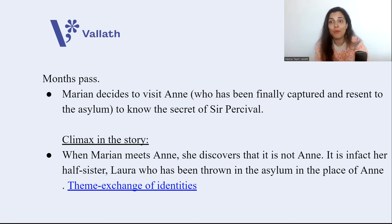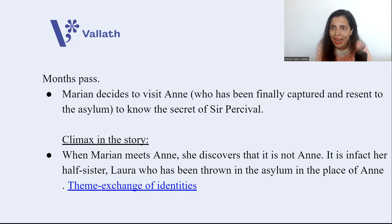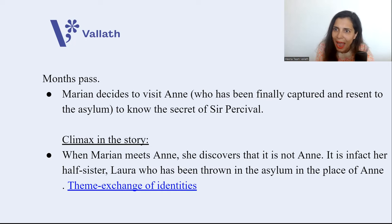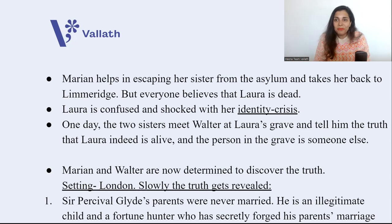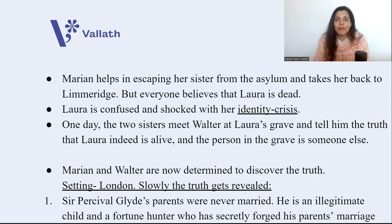At the mental asylum, when Marianne meets Anne, she is shocked — she discovers the woman is not Anne. This woman is Laura, her half-sister. It is Laura who has been thrown in the asylum in place of Anne. The theme here is exchange of identities — there is a strong resemblance in the faces of Anne and Laura. Marianne bribes a nurse at the mental asylum, helps her sister Laura escape, and takes her back to Limeridge. But at Limeridge, everyone believes Laura is dead, leaving Laura confused with an identity crisis.